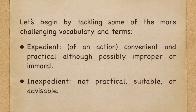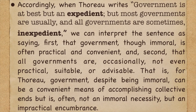Let's begin by tackling some of the more challenging vocabulary. Expedient: convenient and practical, although possibly improper or immoral. Inexpedient: not practical, suitable, or advisable. Accordingly, when Thoreau writes, government is at best but an expedient, but most governments are usually, and all governments are sometimes, inexpedient, we can interpret the sentence as saying: first, that government, though immoral, is often practical and convenient; and second, that all governments are occasionally not even practical, suitable, or advisable. That is, for Thoreau, government, despite being immoral, can be a convenient means of accomplishing collective ends, but is often not an immoral necessity but an impractical encumbrance.